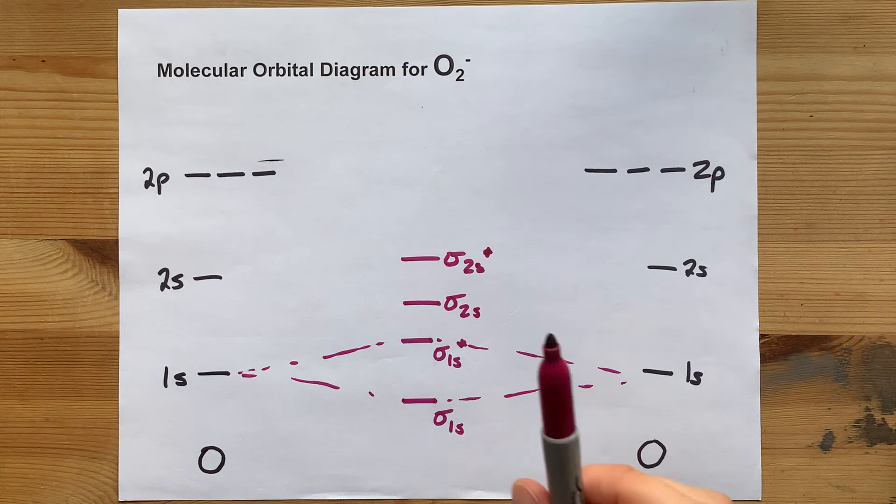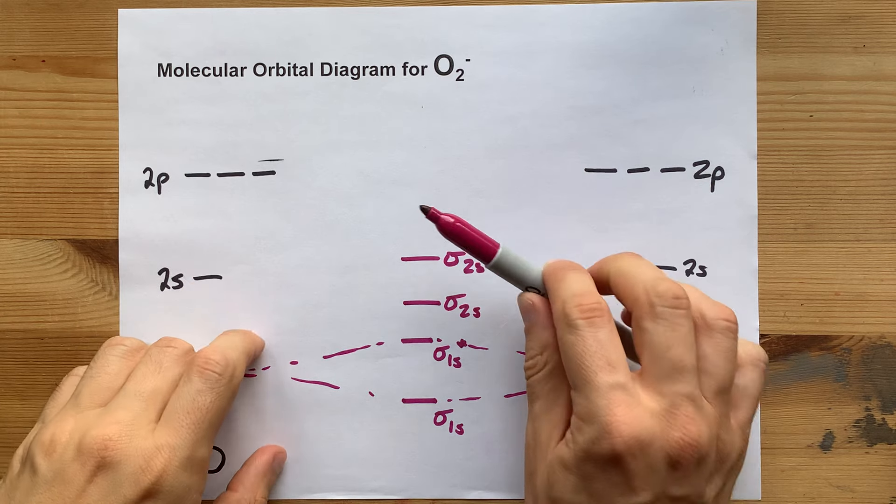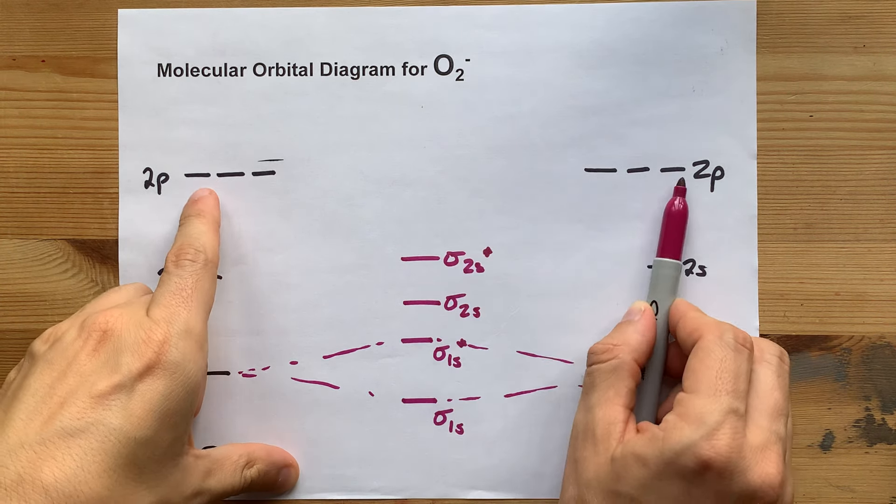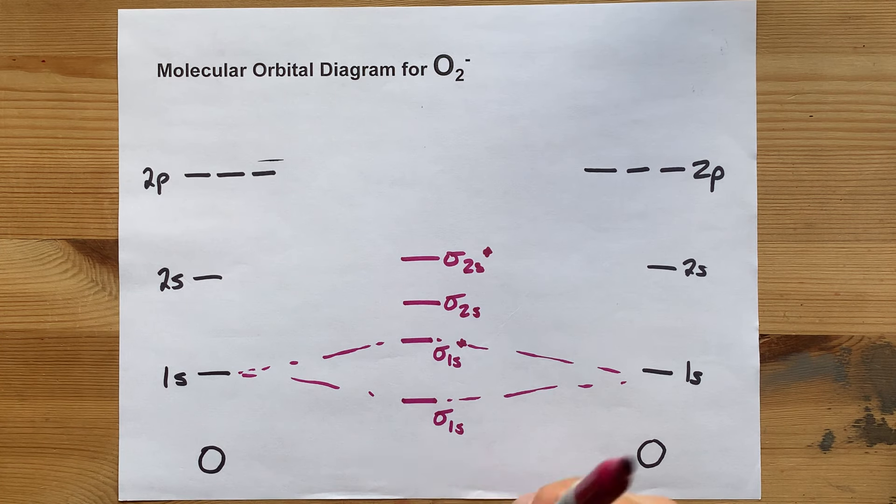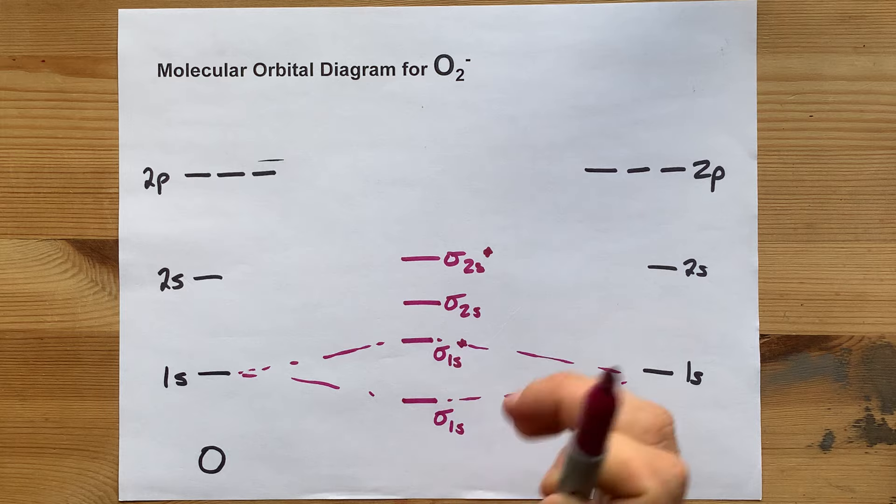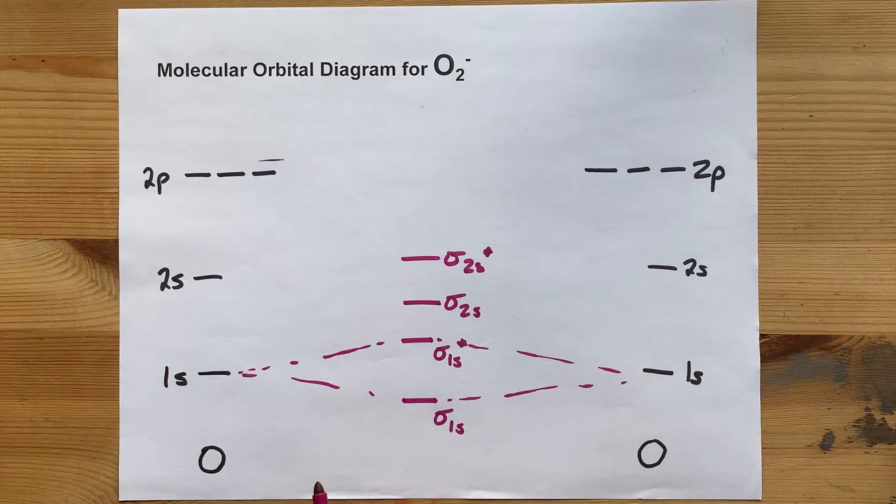Now, what I find kids get tripped up on is the arrangement of the molecular orbitals when the 2ps come together. You'll notice we have 1, 2, 3, 4, 5, 6 atomic orbitals that are going to overlap here.